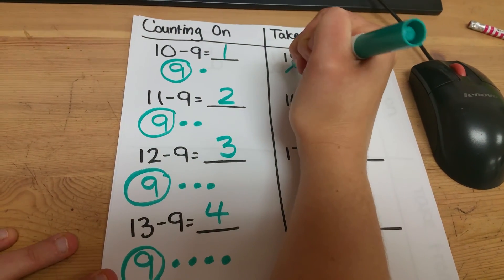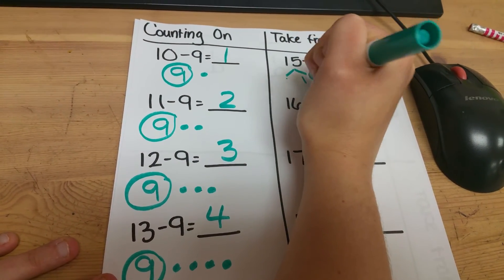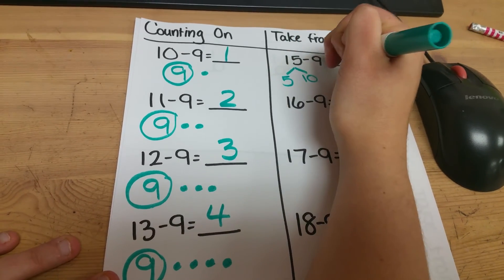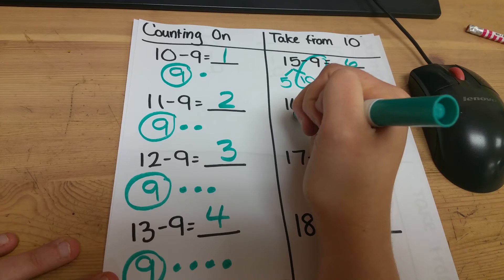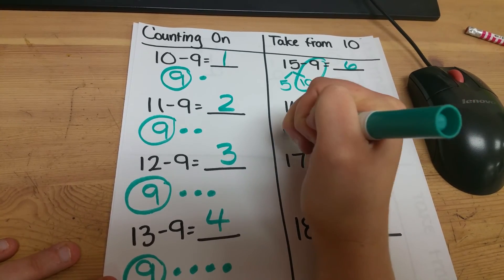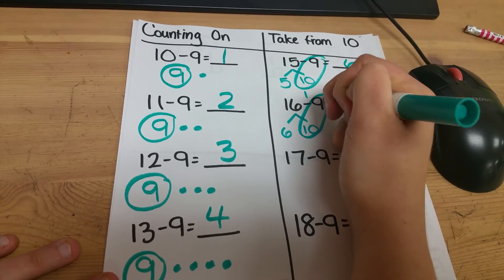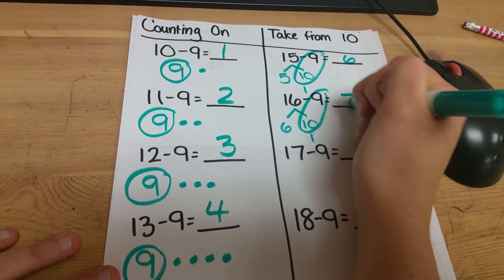15 minus 9. Breaking it apart into 10 and the ones. 10 minus 9 is 1. 5 plus 1 is 6. Again, breaking it up to 10 and the ones. 10 minus 9 is 1. 1 plus 6 is 7.